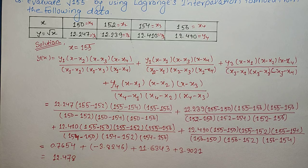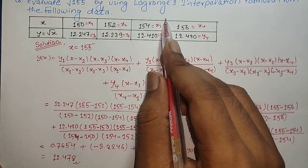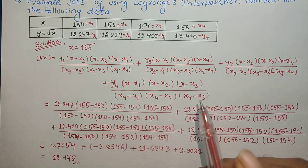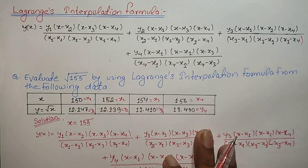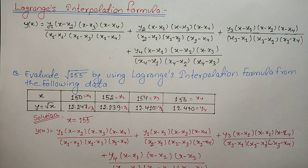On solving and adding all terms, we get the final answer of approximately 12.478, which lies between 12.410 and 12.490 — consistent with √155 lying between √154 and √156. I hope you liked the video. Stay connected with Civil Learning Online, subscribe, and in the next lecture I will be adding a video on Newton's divided difference formula. Have a nice day!